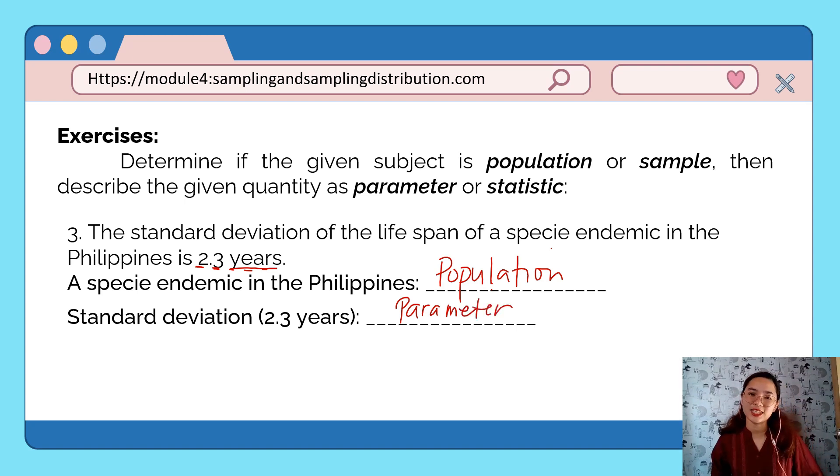So it's just like that. When what is being described is a population, it's a parameter. Population is when it's the totality. Sample is when it's only a portion of your population. Statistic is when what is being described is your sample.